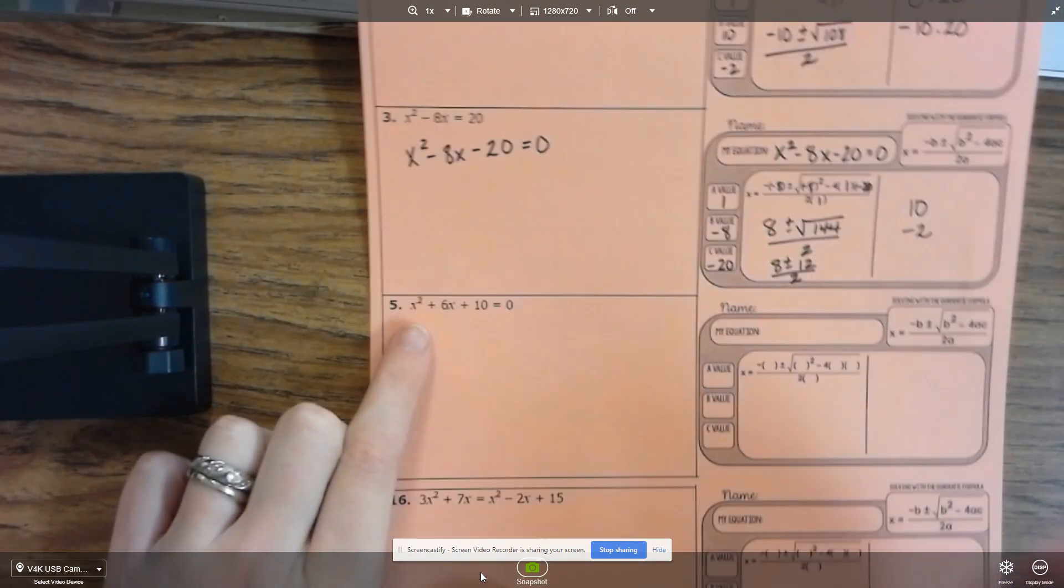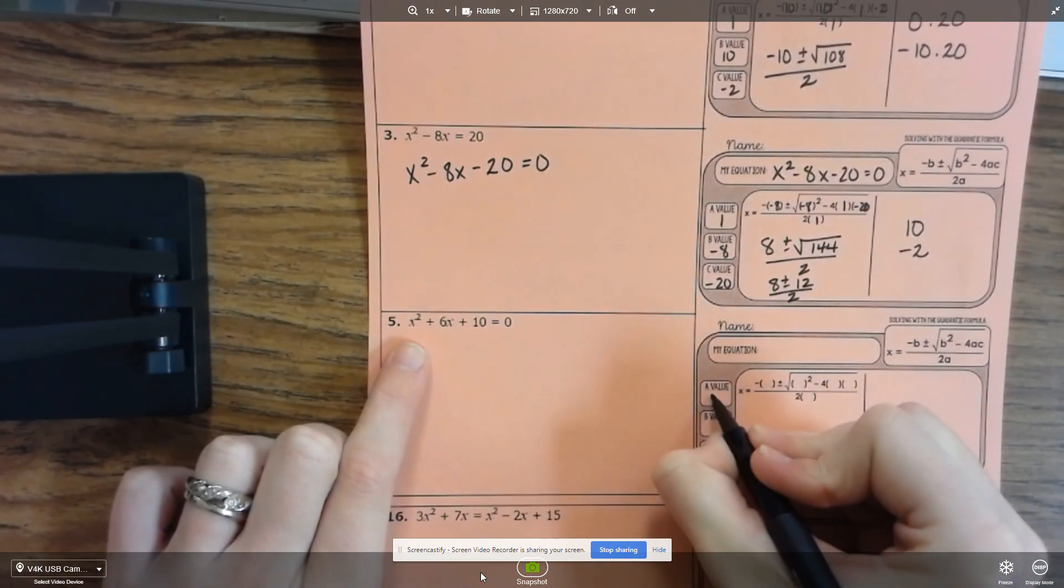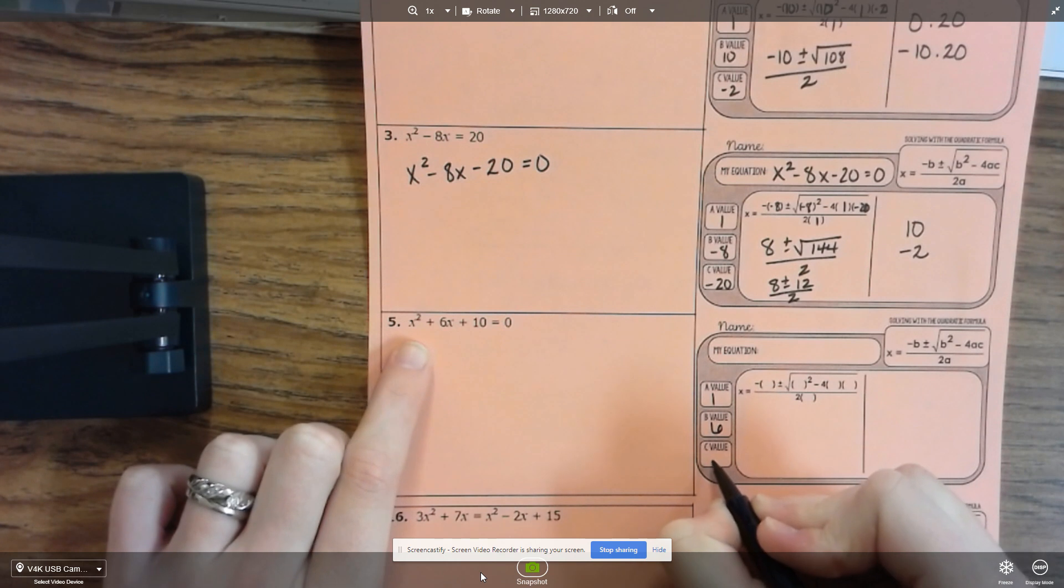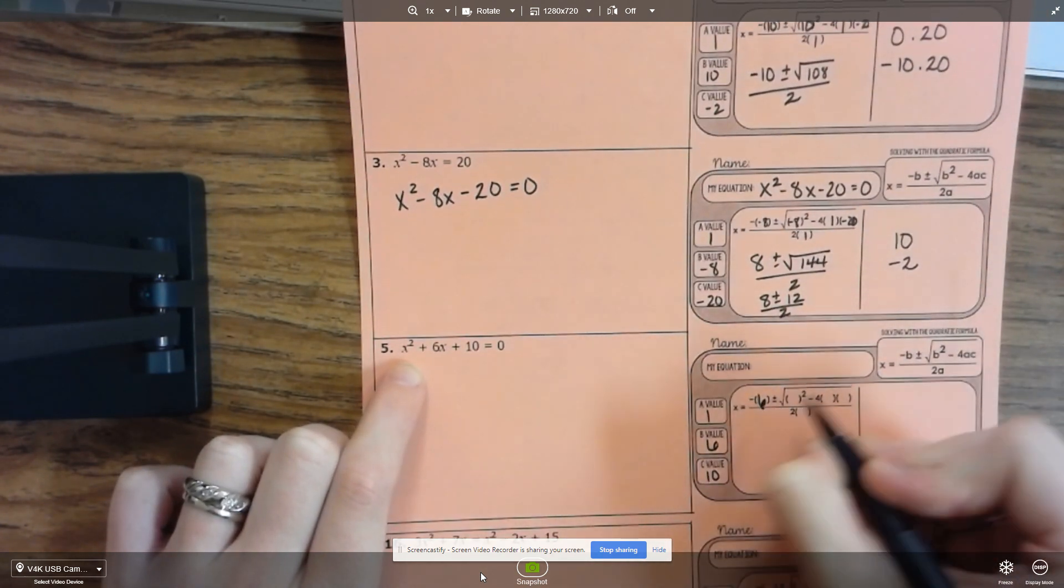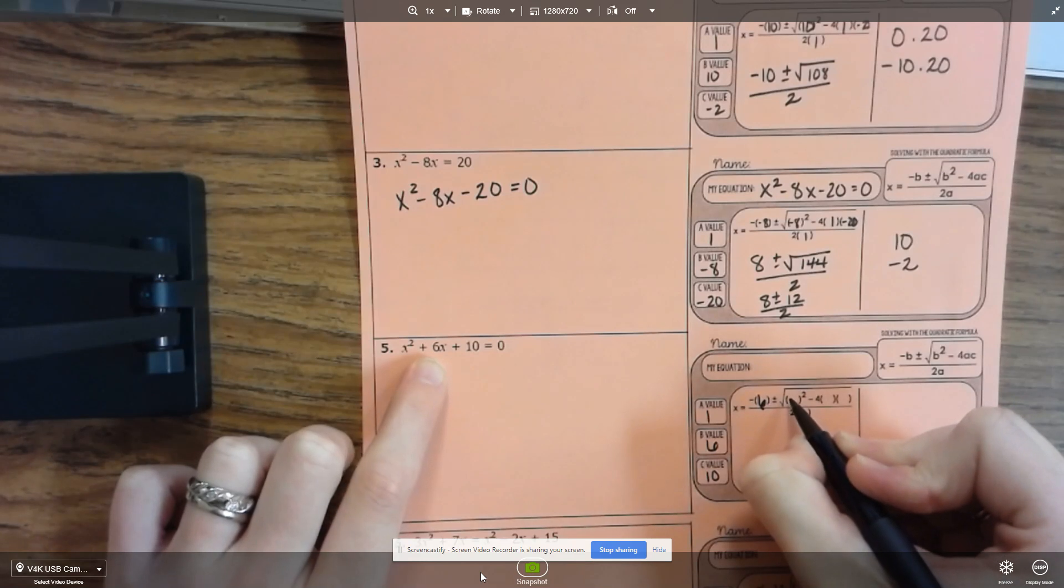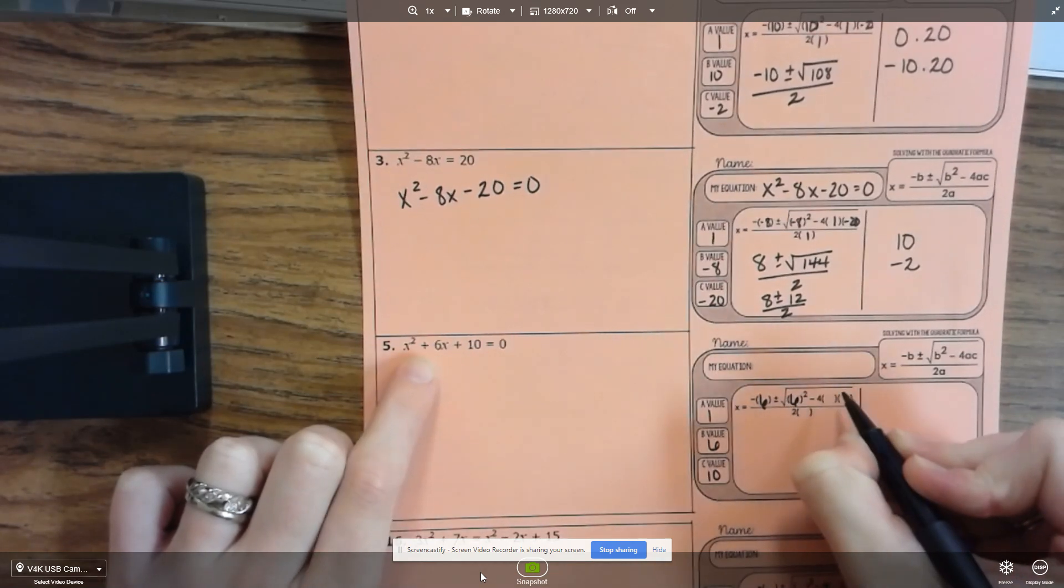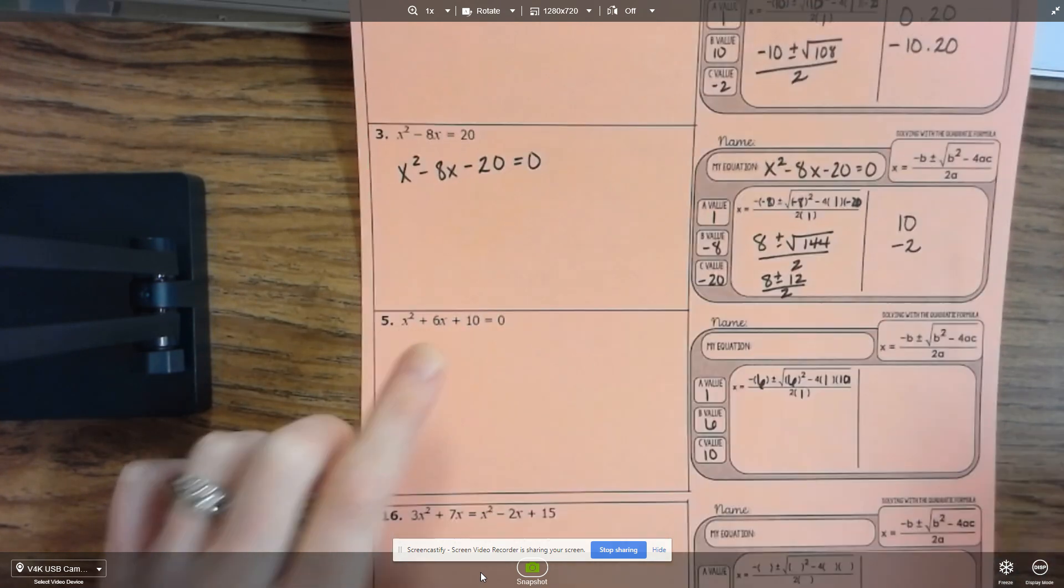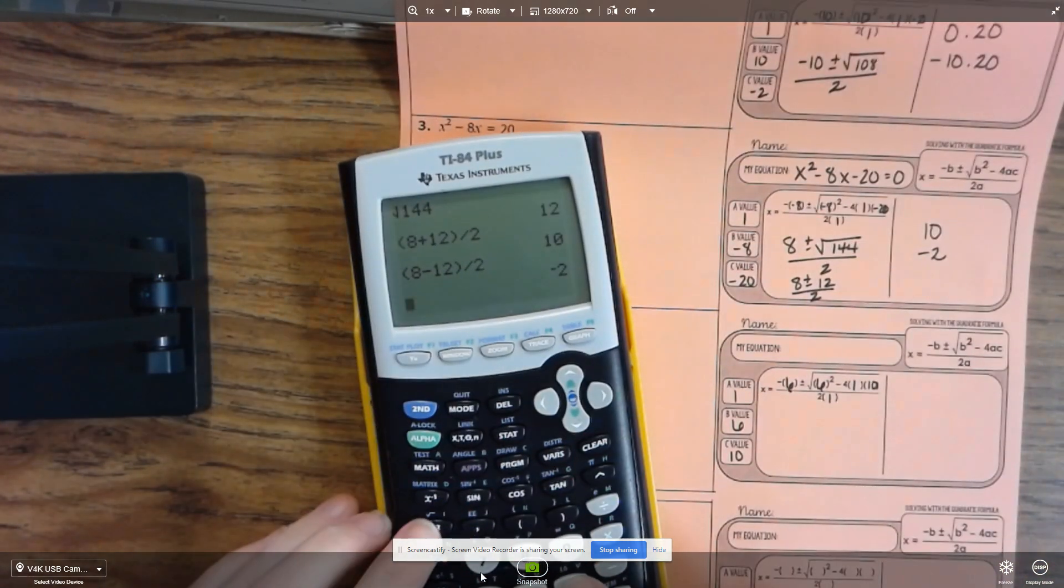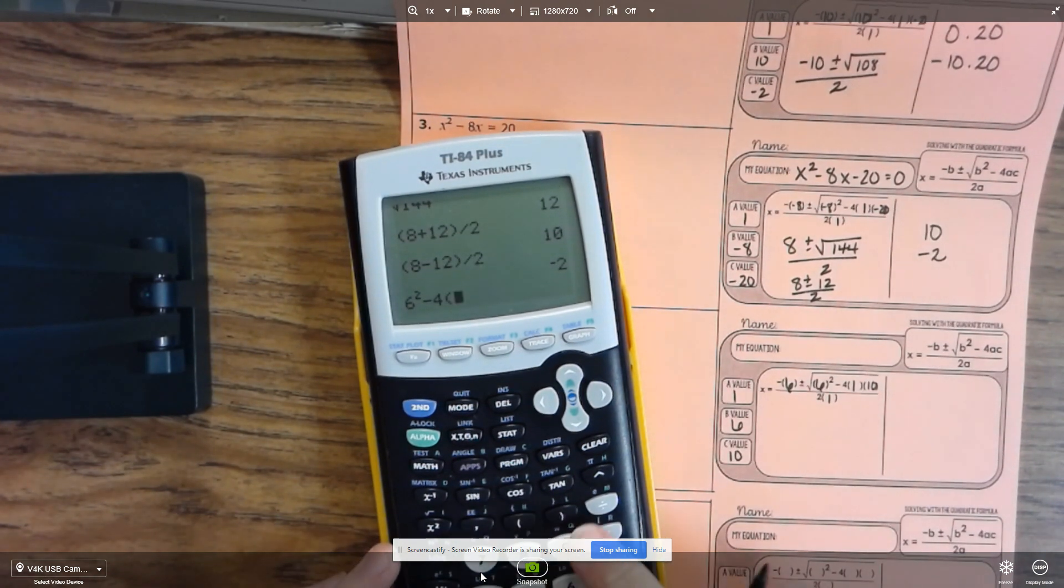All right, so here's my next one. So my a is 1, b is 6, c is 10. And so 6 squared, a, c, so I have 6 squared minus 4 times 1 times 10.